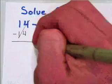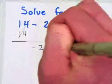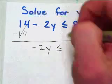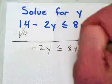So on the left-hand side of the inequality sign, I'm left with negative 2y, less than or equal to, and again, these two terms are not like terms. 8x minus 14.